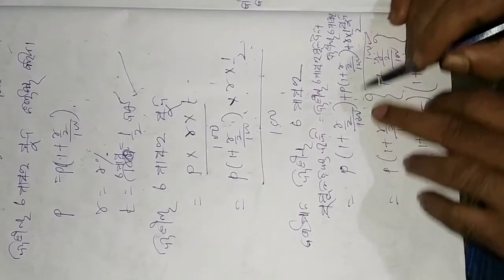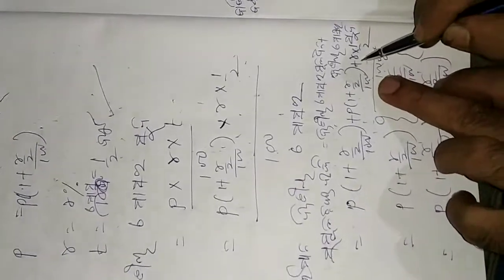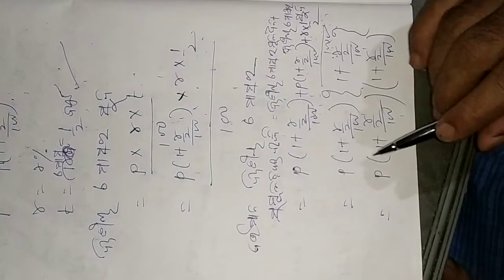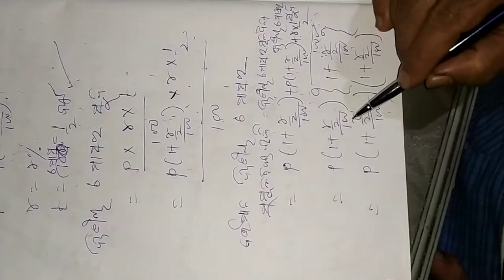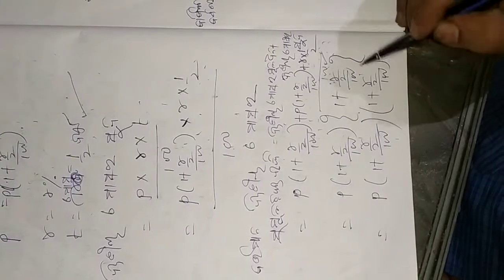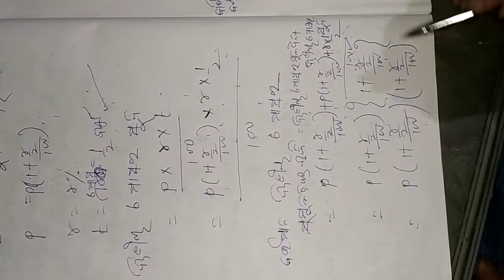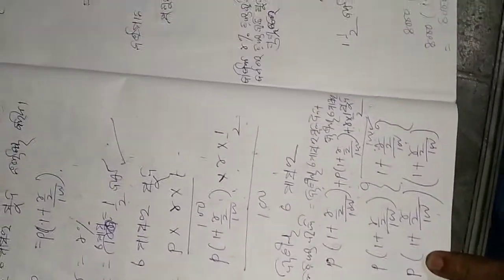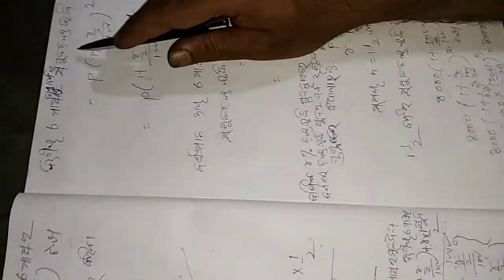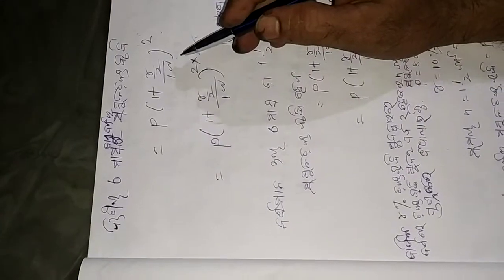P into 1 plus r by 2 by 100, plus r into 1 by 2 by 100. This is common, so P into 1 plus r by 2 by 100 is the common factor. This gives us 1 plus r into 1 by 2 by 100, so the factor is P into that expression.